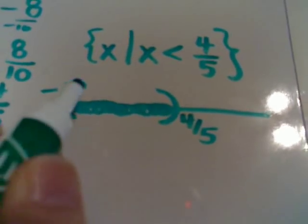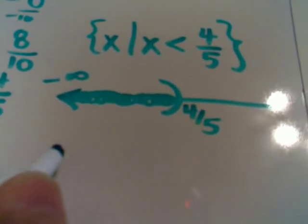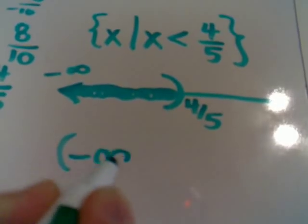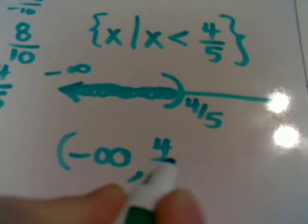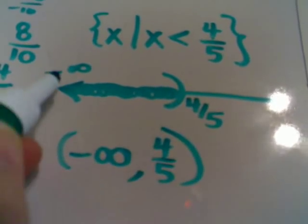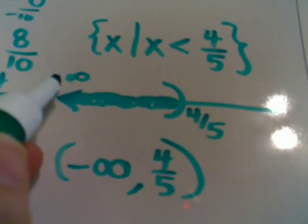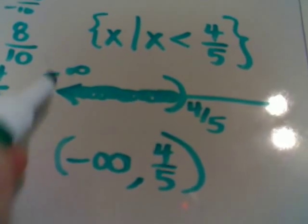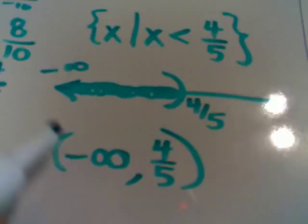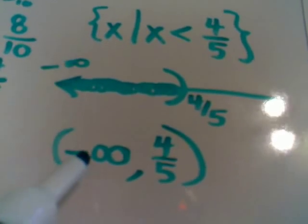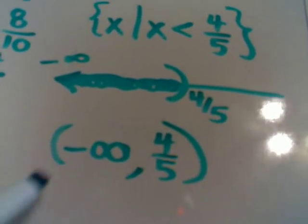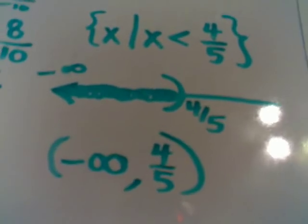When you go from the graphing to the interval notation, notice interval notation goes from negative infinity comma to four fifths. If you already have the negative infinity on your graph up here, it's a logical transition to put it there, and it's also logical to put it to the left of four fifths since it's to the left of four fifths on your graph.